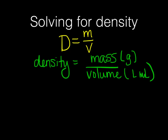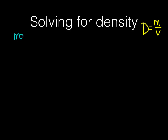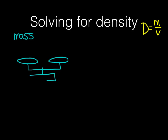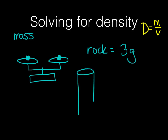Now let's take a look at each component individually. To find density, the first thing we need is the mass. We use a triple beam balance to find the mass of the object. We're going to say the mass of this little rock equals 3 grams. The next thing we need to find is the volume, and to find the volume we use a graduated cylinder — 3 milliliters.